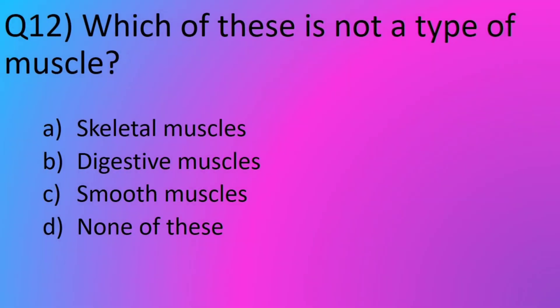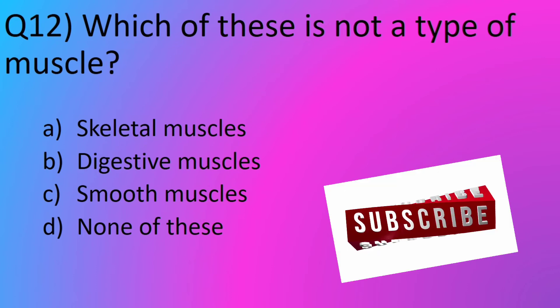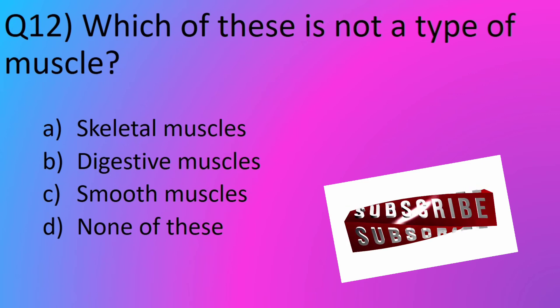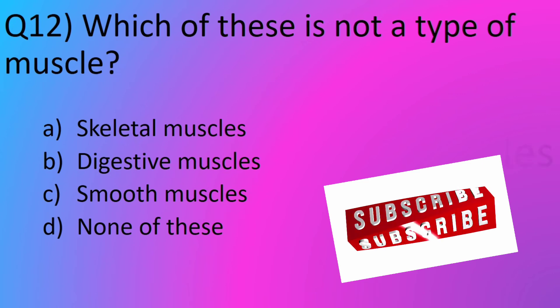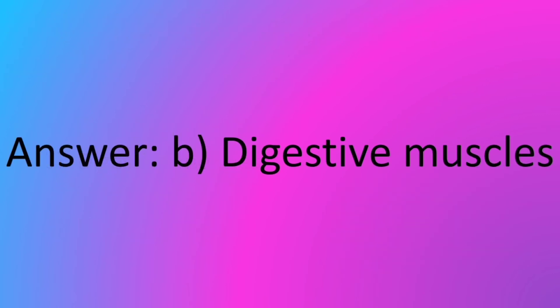Question No. 12: Which of these is not a type of muscles? Option A: Skeletal muscles. Option B: Digestive muscles. Option C: Smooth muscles. Option D: None of these. The answer is Option B: Digestive muscles.